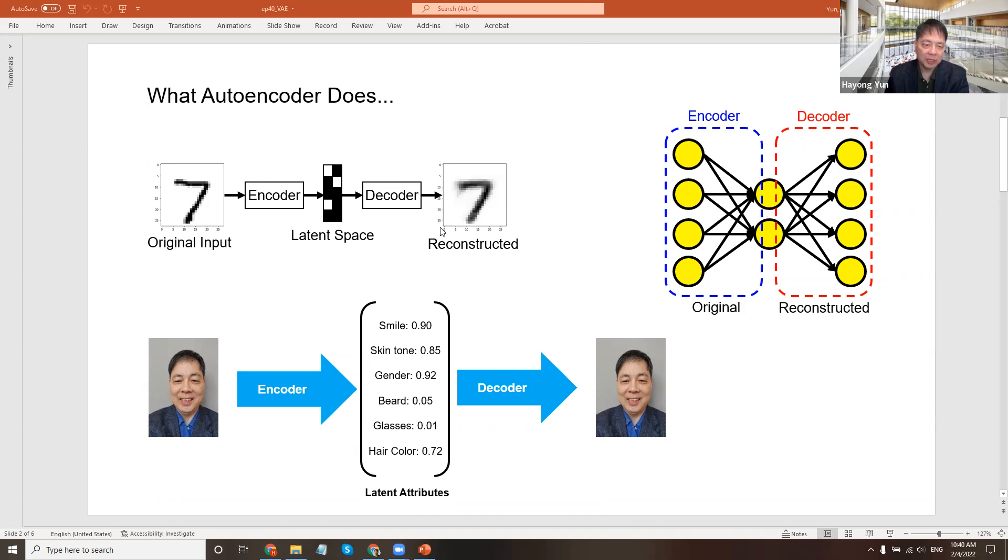If you look at it more carefully, the encoder, when you go to a bottleneck here, has like one, two, three, four, five, six dimensions.